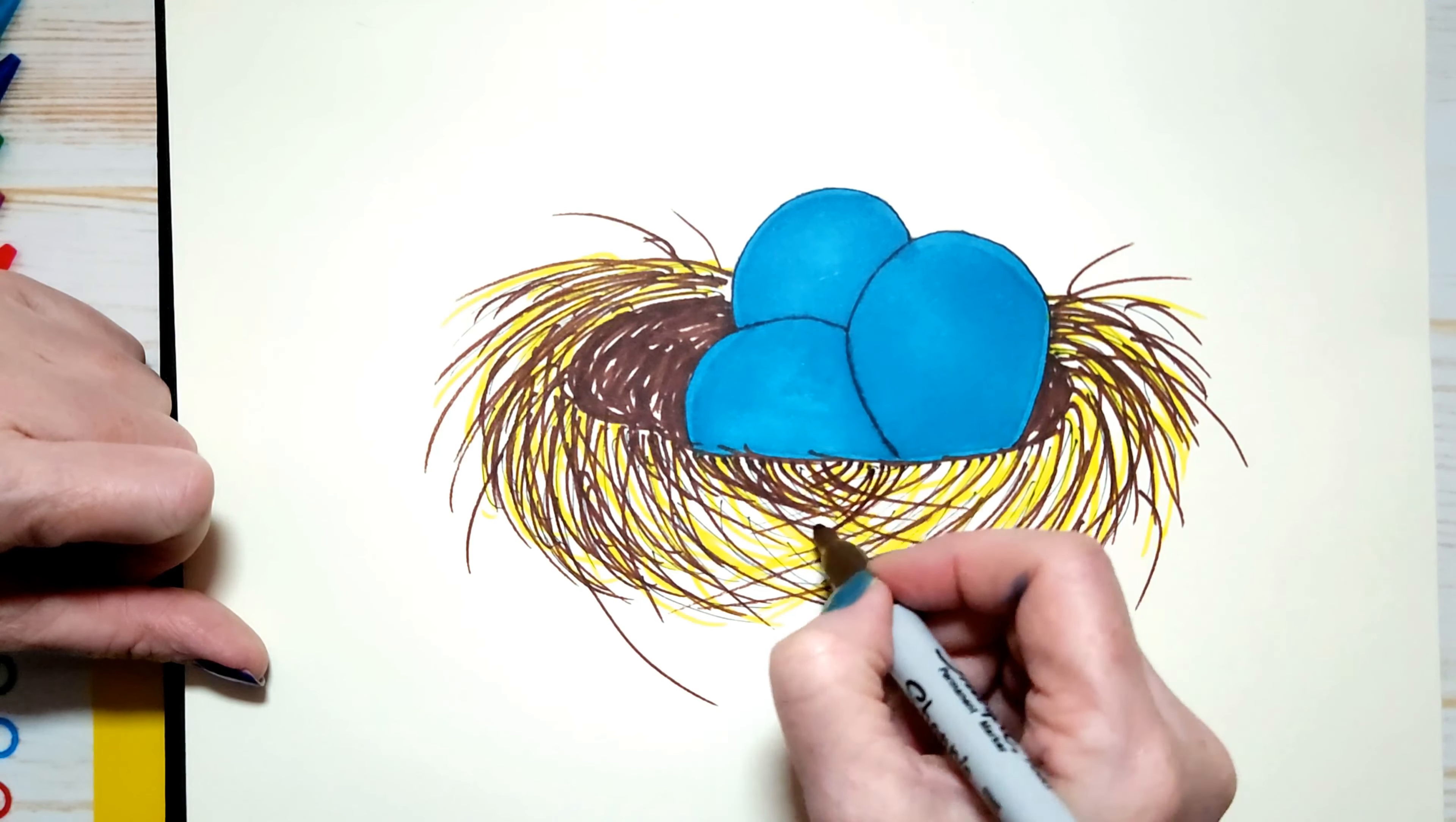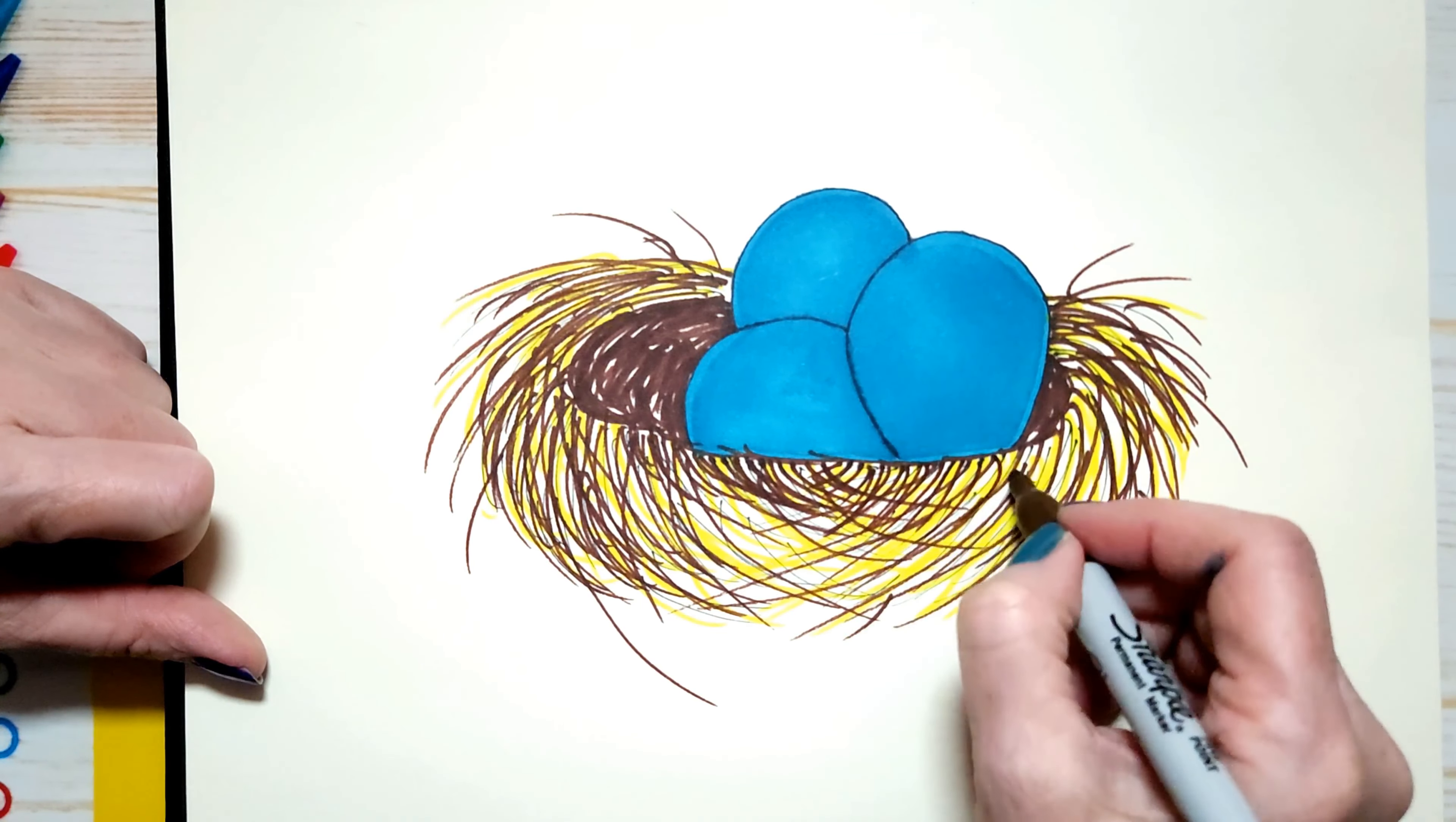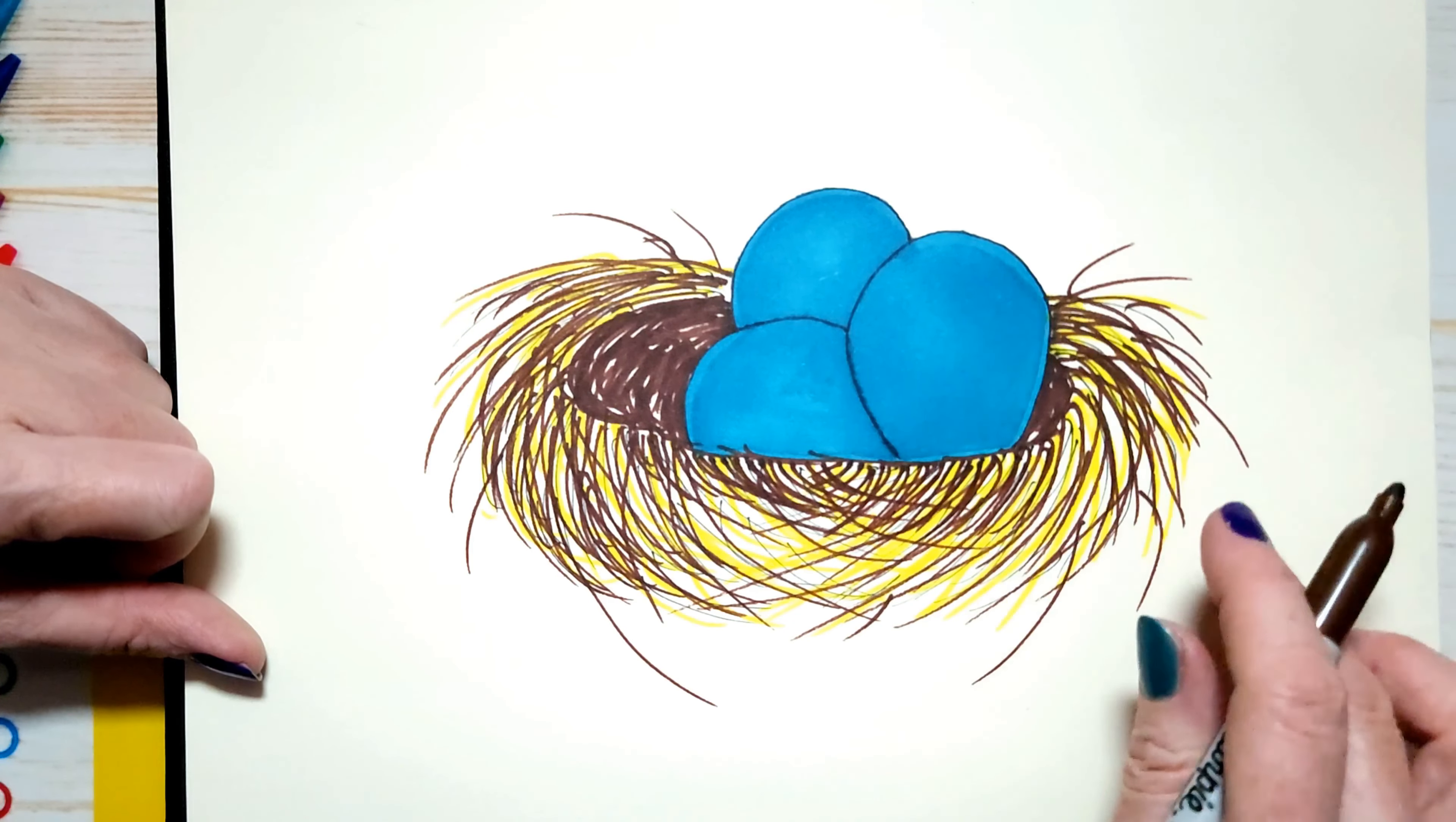But that means we're following the contour of the nest or the shape of the nest. If the nest is round, we want to put our twigs in a circular shape.